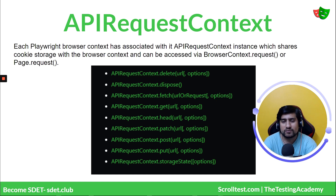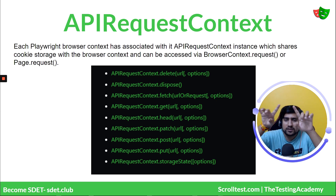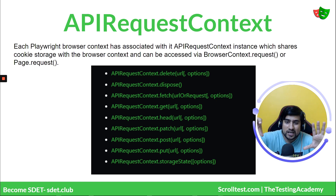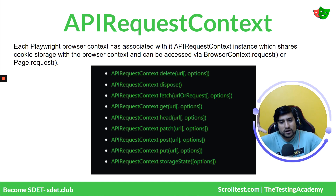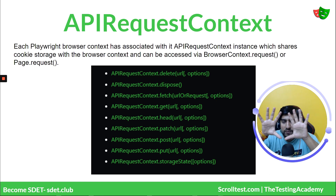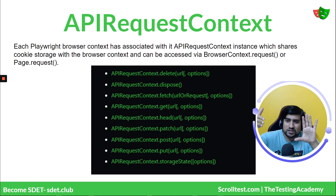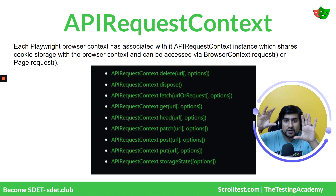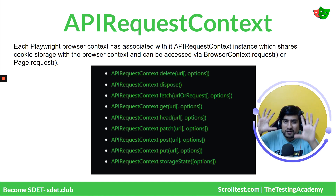The browser context in Playwright is essentially a window where Playwright has certain functions to directly communicate with browsers. Each browser context is isolated — if you open a different context, they are separate. This browser context also has an API Request Context, which you can use to create different HTTP methods like GET, PUT, PATCH, and DELETE calls.